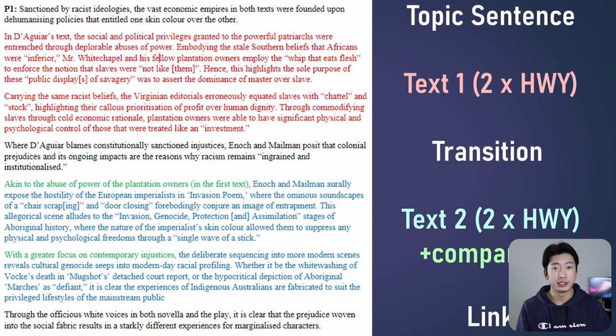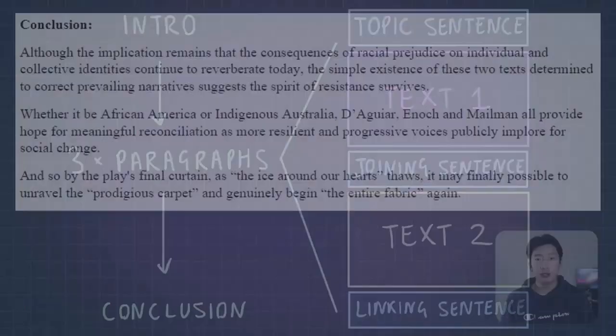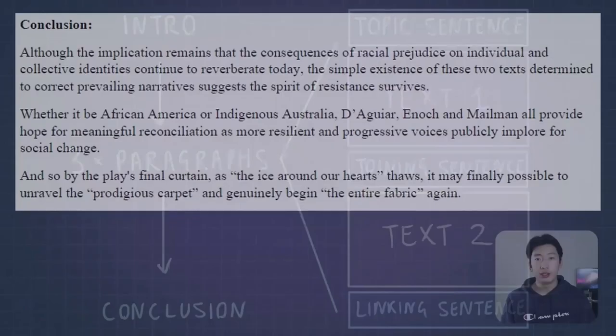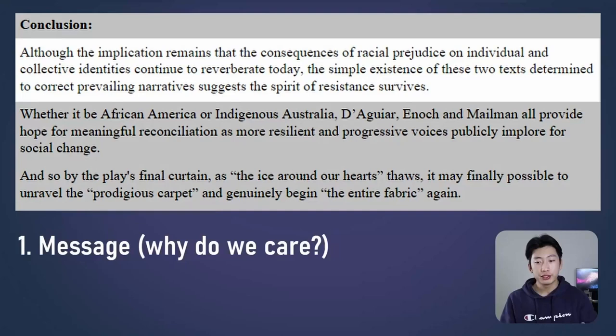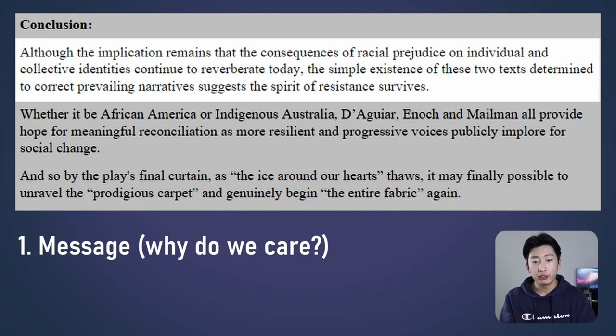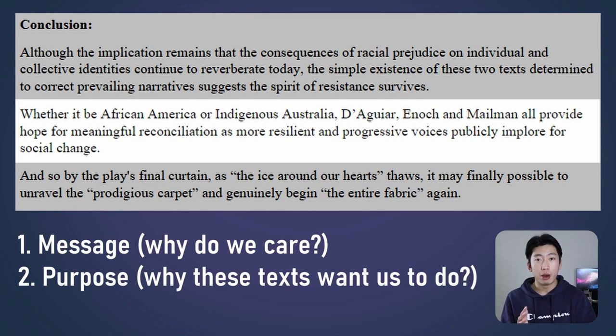The final thing is the conclusion. Like the intro, I also like to have three sentences. First, I talk about the broader message and why we even care about these texts: 'although the implication remains that the consequences of racial prejudice on individual and collective identities continue to reverberate today, the simple existence of these two texts, determined to correct prevailing narratives, suggests that the spirit of resistance survives.' The next sentence summarizes the two texts and what they seek to achieve: 'whether it be African America or Indigenous Australia, Duguay, Enoch, and Mailman all provide hope for meaningful reconciliation, as more resilient and progressive voices publicly implore for social change.'